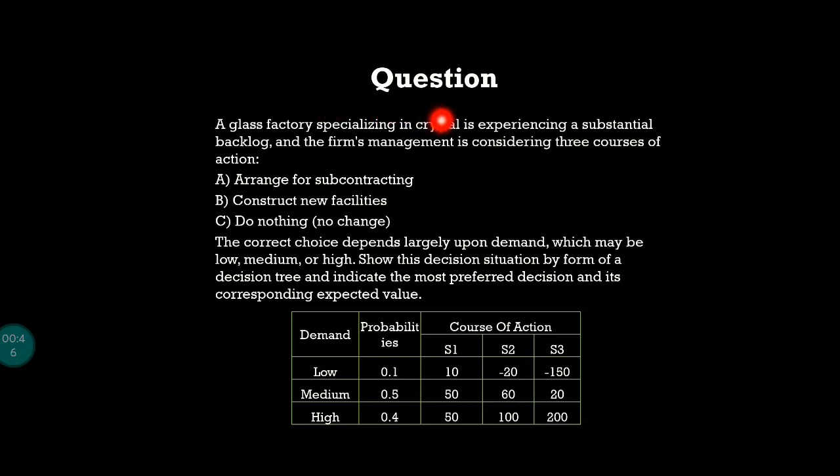Show this decision by form of a decision tree and indicate the most preferred decision and its corresponding expected value. We have a glass factory specializing in crystal manufacturing. There is a substantial backlog - they are not able to meet the demand, they are short of production.